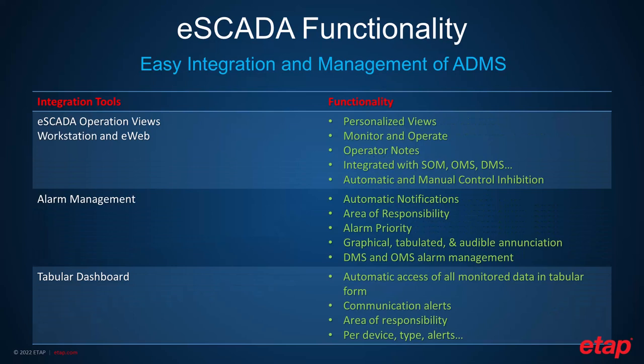The SCADA functionality includes SCADA operation views and web views — personalized views that allow you to monitor and operate the system. It provides operator nodes, so if you want to inhibit controls while somebody is doing maintenance, the operator can drop an operator node and automatically inhibit the controls while that maintenance is happening. It is integrated with switching order management, outage management, and distribution management system, and can perform control inhibition automatically or manually.